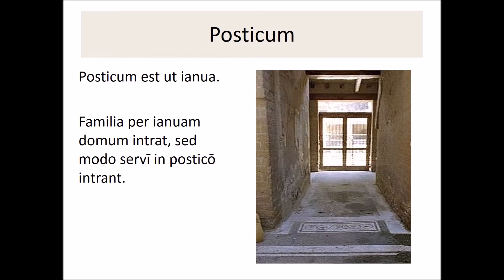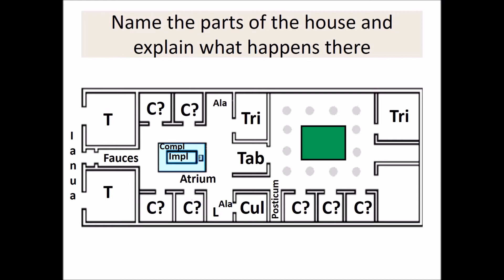The next area of our house is the posticum. Posticum est ut janua. Familia per januam domum intrat, sed modo servi in postico intrant. Here you'll see the location of the posticum, or the servant's entryway, almost like a back door. Now typically it's only the family who's going to enter through the main janua, or the front door, and then the servant's entrance, the posticum, is where these slaves, whether they lived within the house or just came to work at the domus every single day, that's where they would enter. And you'll notice that it is particularly close to the culina, so it would be a very easy trip to the culina for any of the servants who were working, in order to make their way to their workstation without being seen by the familia who lived there.